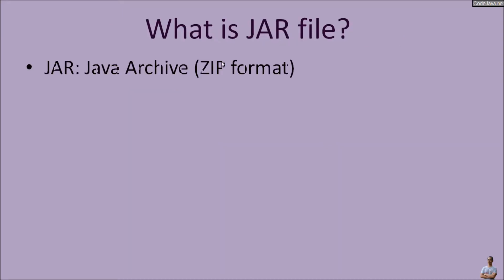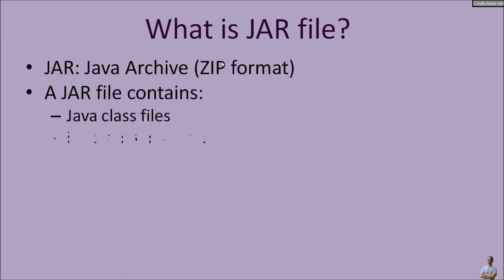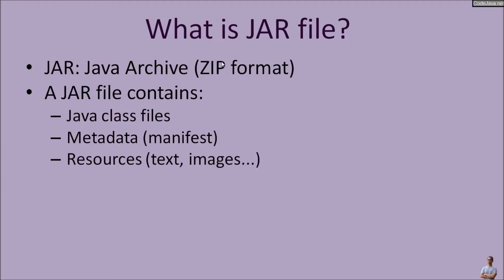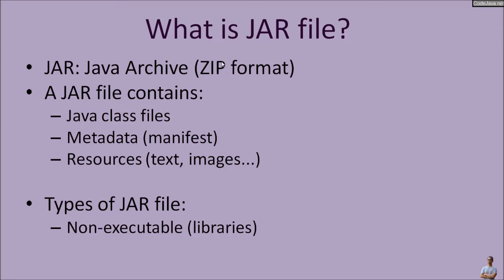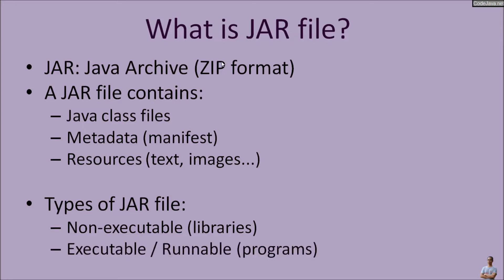So, what is a JAR file? In Java, JAR stands for Java Archive. It is a type of file in ZIP format, and a JAR file contains Java class files, metadata or manifest information, and resources like text or images. There are two main types of JAR file: non-executable or libraries, and executable or runnable for programs.